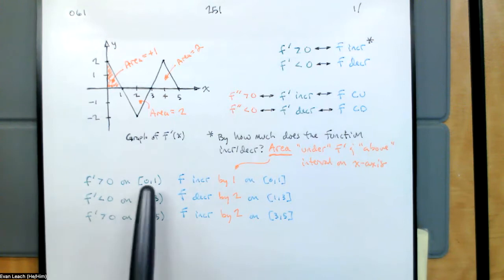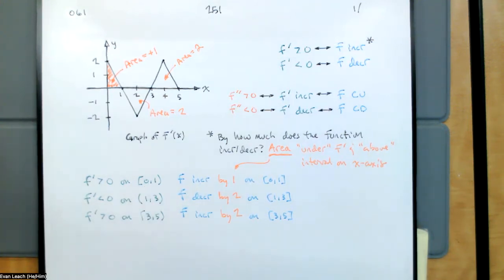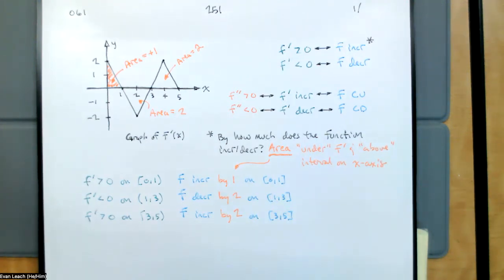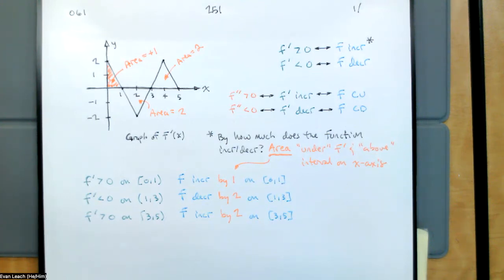Correct, because f prime of 1 is equal to zero. So I can't say that f prime is positive on the interval from 0 to 1 including 1 — I have to exclude 1, because f prime of 1 is equal to zero. But when I say f is increasing, I can say whatever it starts at — f of 0 — f of 1 is one higher. Rather than just saying f is increasing on the interval from 0 to 1, I said f increases by one on the interval from 0 to 1. Because I'm saying by how much it's increasing, I get to include the endpoints.